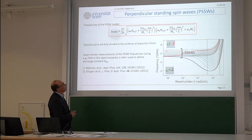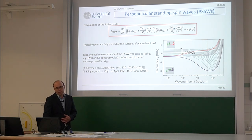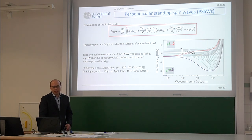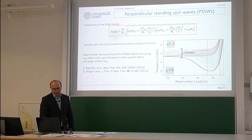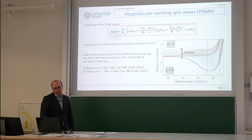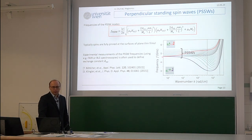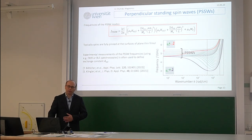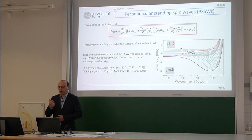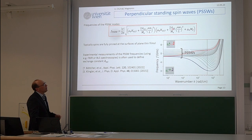How to calculate frequency for PSSVs: the analytical expression looks similar to a dispersion curve but there is no k in it — it calculates resonance frequencies, not propagating waves. They depend on the effective field (including demagnetization), the exchange constant, and the film thickness L. You can also refer to a paper by Stefan Klingler showing how to measure standing waves using ferromagnetic resonance to characterize the film and extract the exchange constant from measurements.